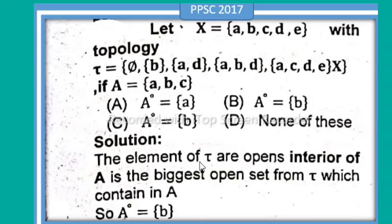With topology τ equal to empty set, set b, set a d, set a b d, set a c d e, and X. If A is equal to set a, b, c.